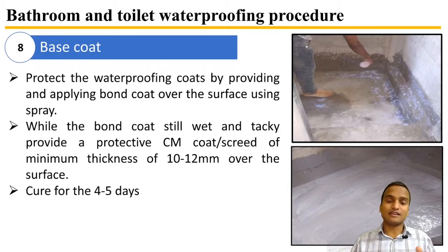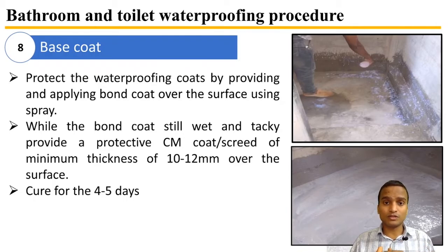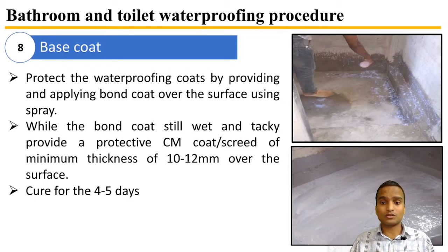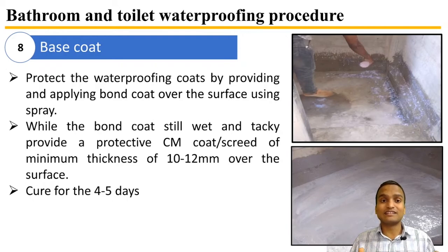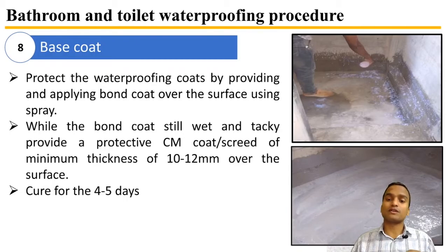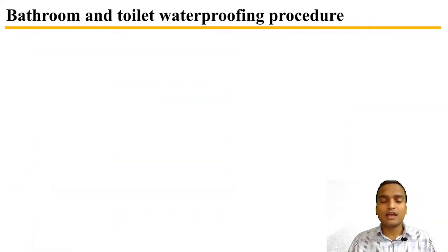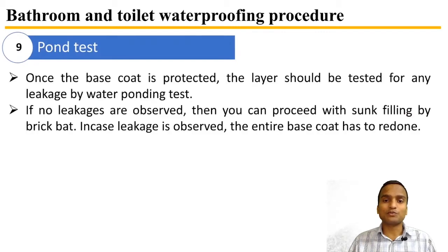To recap the procedures so far: cleaning, pond test, pressure grouting, crack filling, waterproofing coats, bond coat/base coat, and cement mortar coat. After applying the base coat and cement mortar coat, we go for another pond test, because once the base coat is protected by the cement mortar coat, the layer must be tested for any leakage by water ponding.